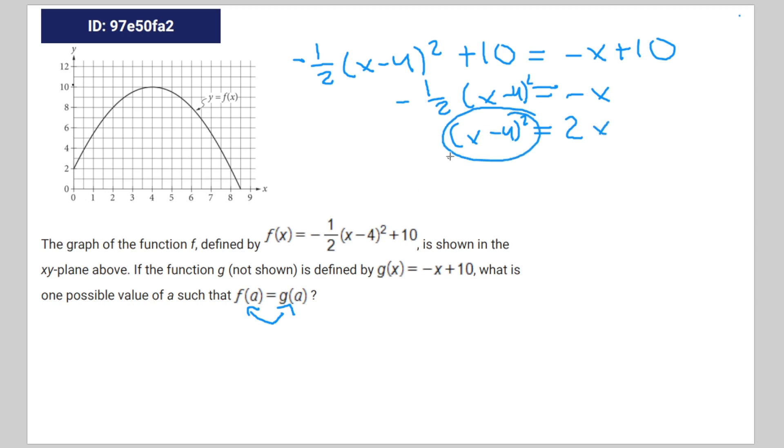Expand this perfect square, you're gonna get x^2 - 8x + 16 = 2x.